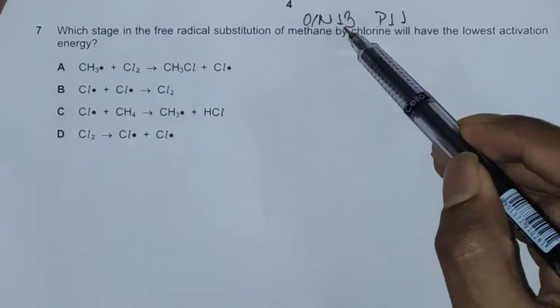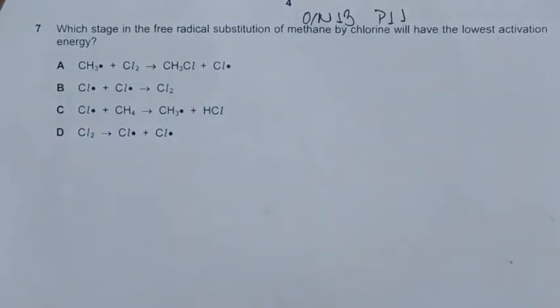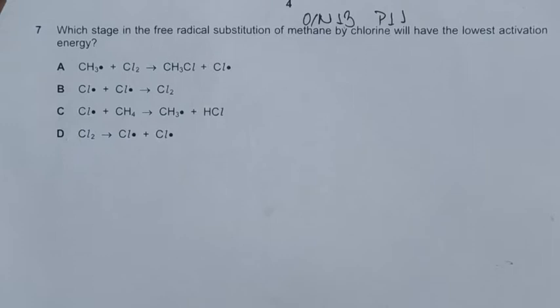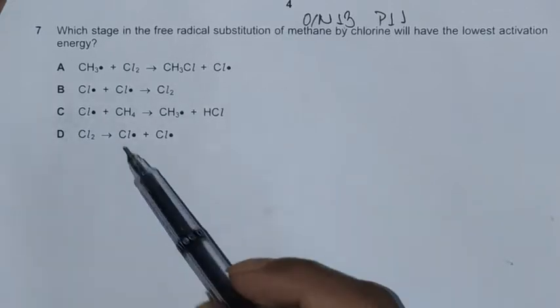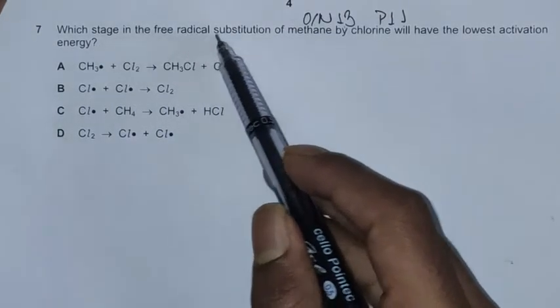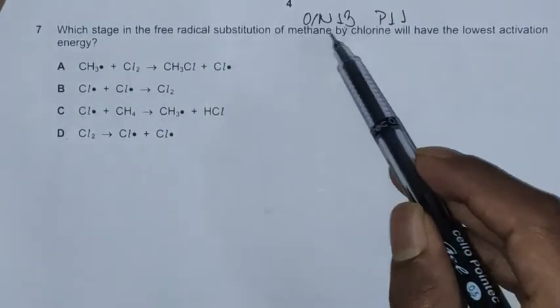Hello everyone, this is a November 13 question paper 1, question number 7, concerned with the chapter rate of reaction. The question asks which stage in the free radical substitution of methane by chlorine will have the lowest activation energy.